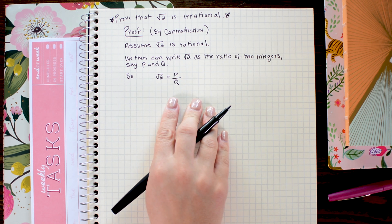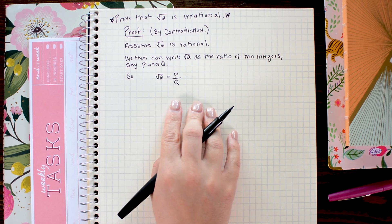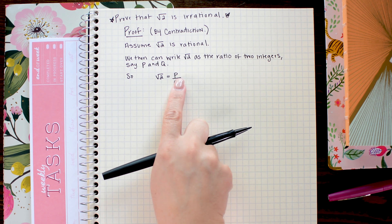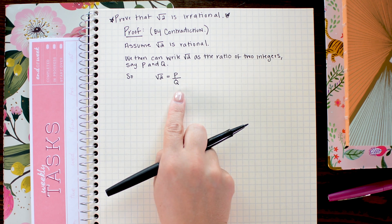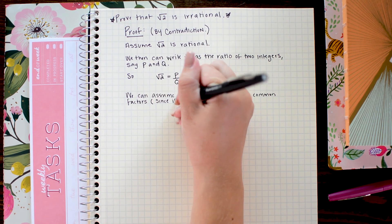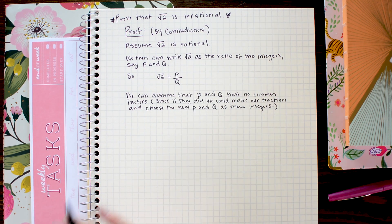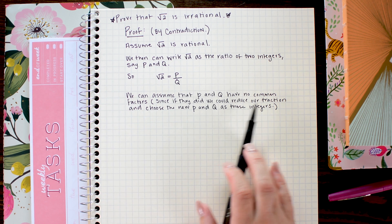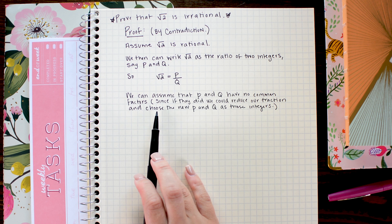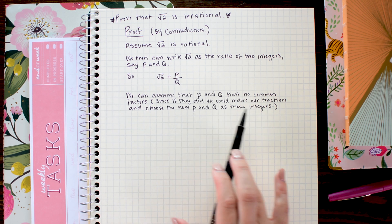At this point, we can say that p and q have no common factors. And that's because if they did have common factors, we could simply reduce this fraction and come up with a smaller integer p and integer q. So it's safe to say that p and q have no common factors. So how I described that in words, I just said we can assume that p and q have no common factors. And then in parentheses, just for good measure, I said since if they did, we could reduce our fraction and choose a new p and q as those integers.